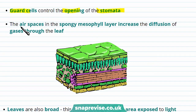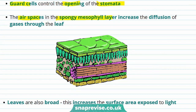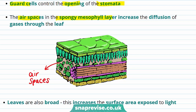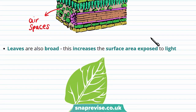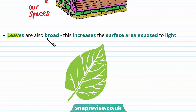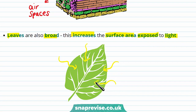Now let's talk about the air spaces in the spongy mesophyll layer. The air spaces are shown in this diagram and they are really important because they increase the diffusion of gases through the leaf. Leaves are also really broad, which increases the surface area exposed to light. This means more light enters the palisade mesophyll cells and this maximises photosynthesis.